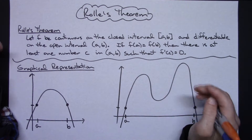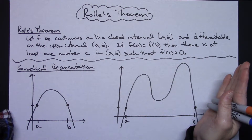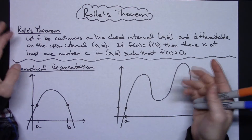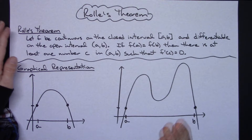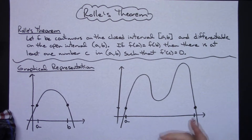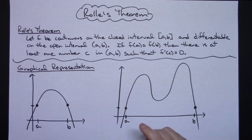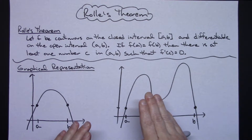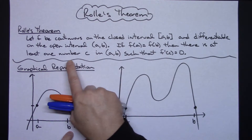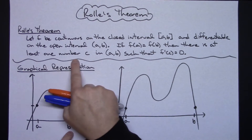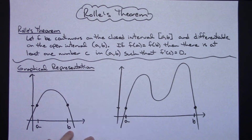This is a pretty simple, straightforward theorem. You can check very easily whether it's continuous on the closed interval and differentiable on the open — which is a very crucial thing to make sure about for the majority of your theorems to hold. Then look specifically at F of A and F of B; if those are equal to each other, then there's one number C where the derivative equals zero.